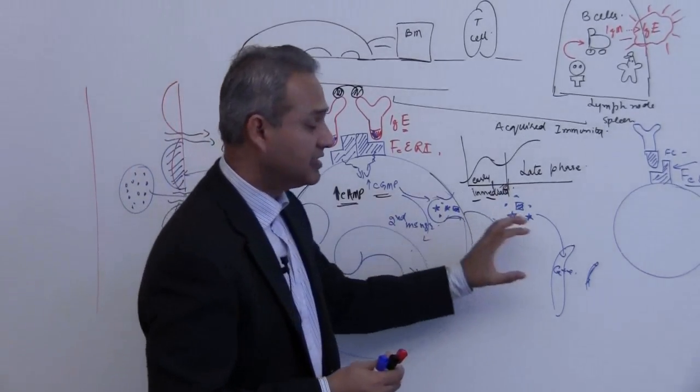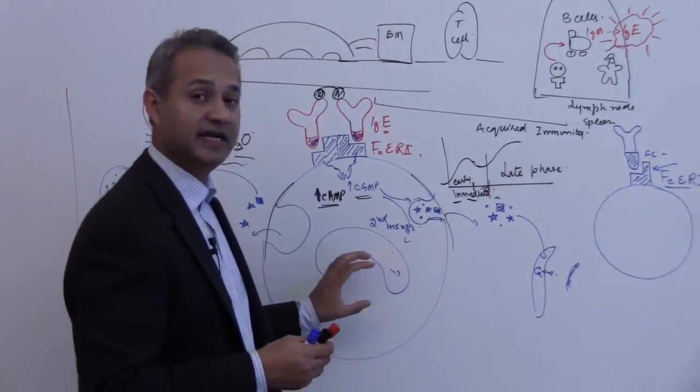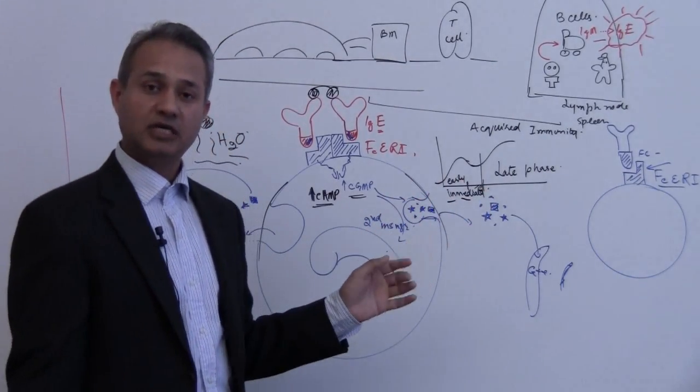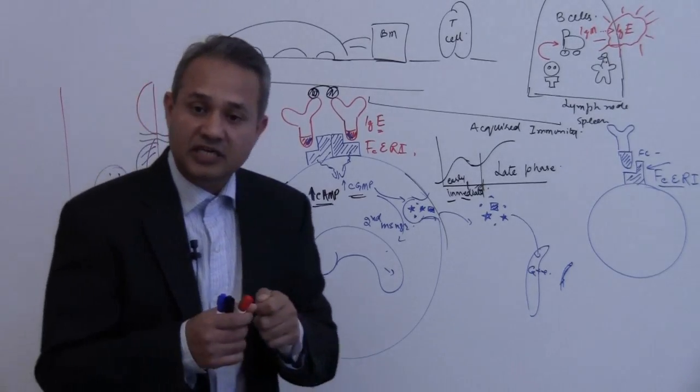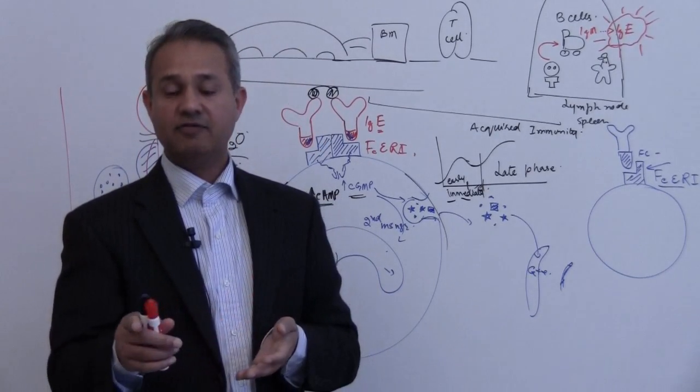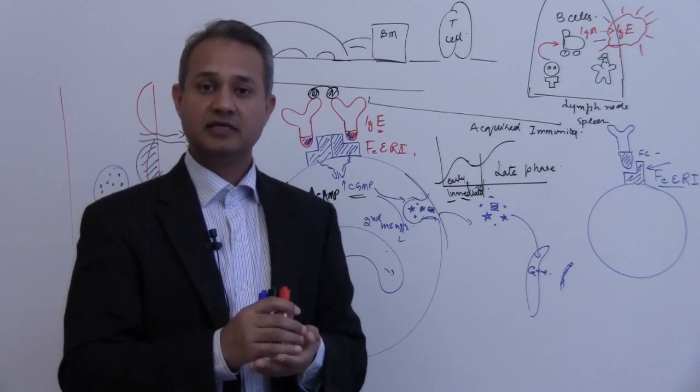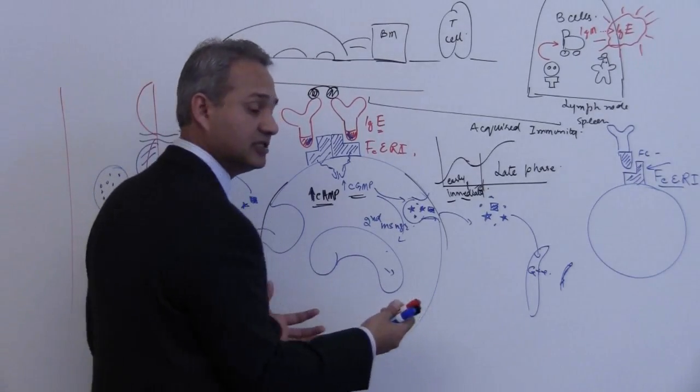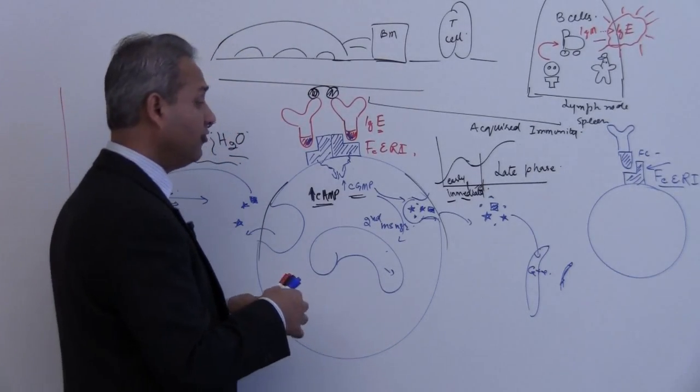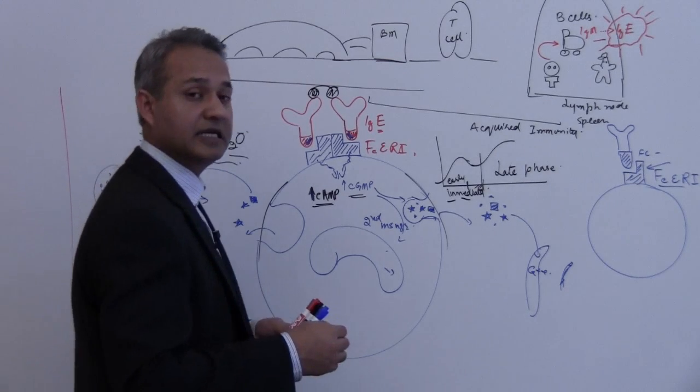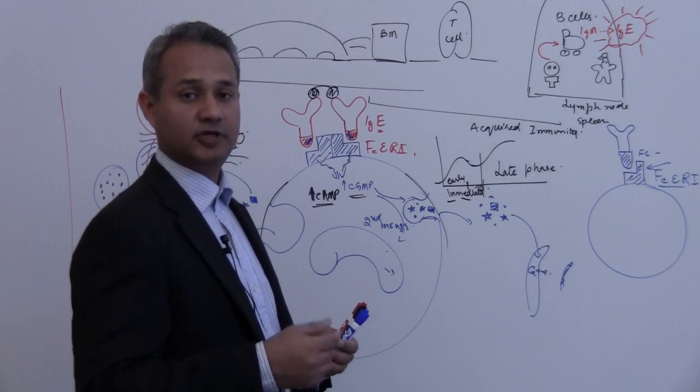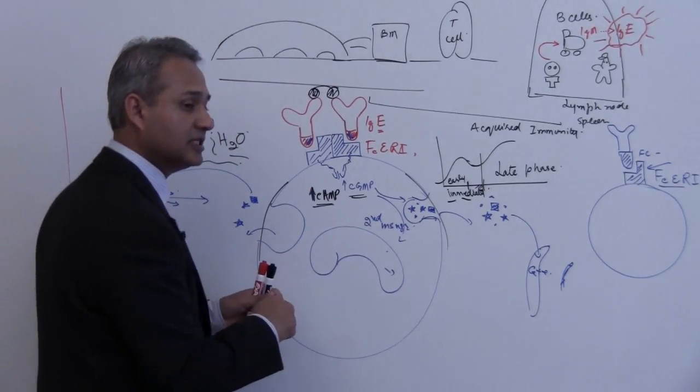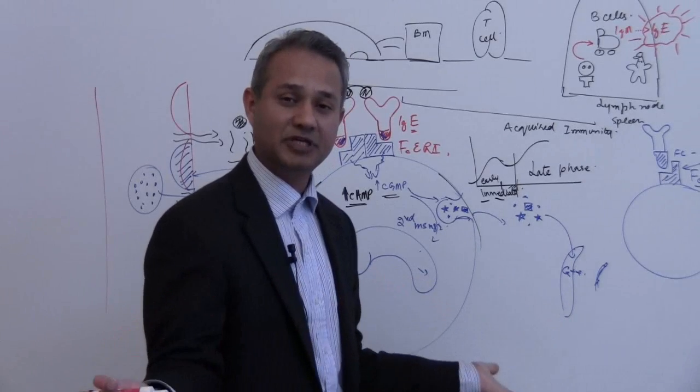But once they have done the degranulation, what happens next is very important. Within two hours and onwards, these cells become busy making one more thing. These cells are now going to make another set of chemical substances which are going to be creating even bigger problem for us.